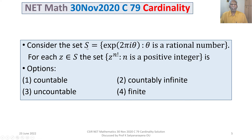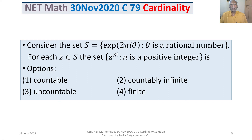You are given the set S, and for each z belonging to S, you have to consider the set consisting of z^(n!) where n is a positive integer, and you have to find out the cardinality of this set for each z belonging to S. Take an arbitrary element z in S, consider this set, and discuss its cardinality.